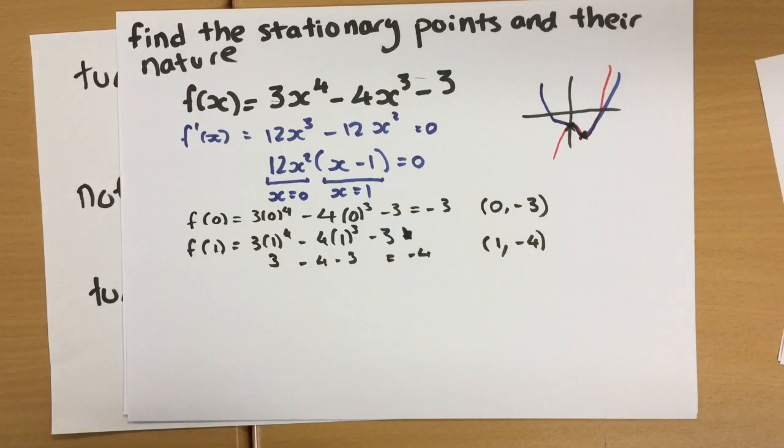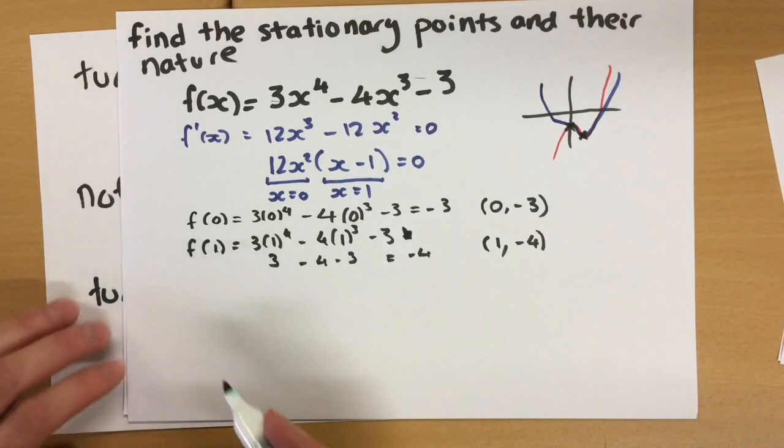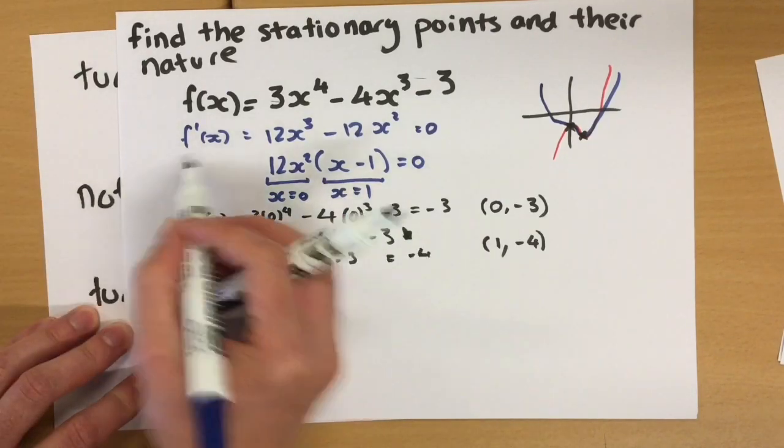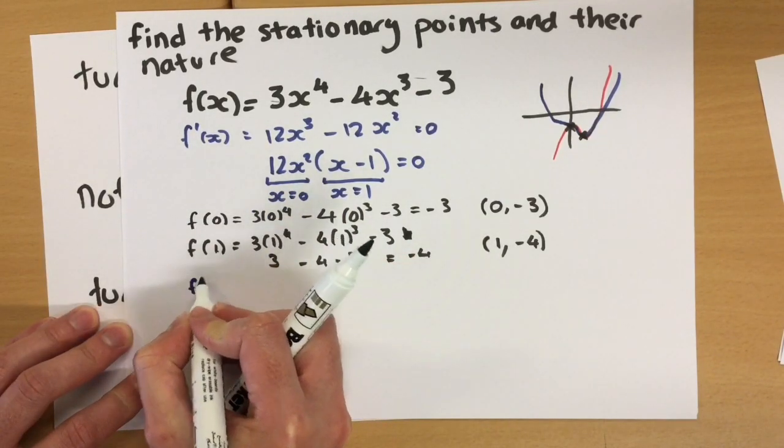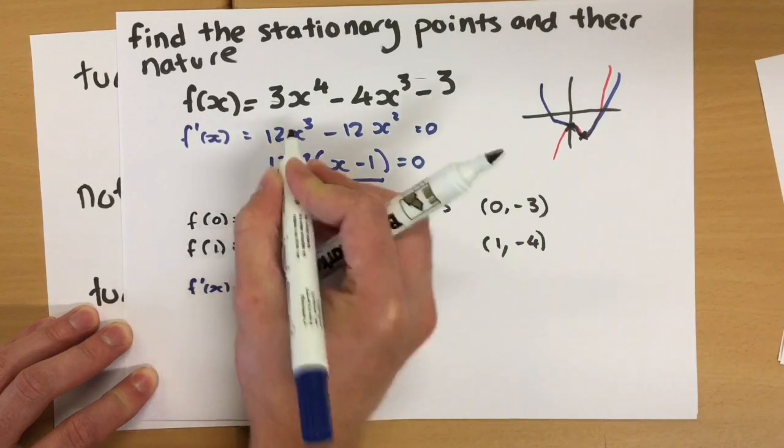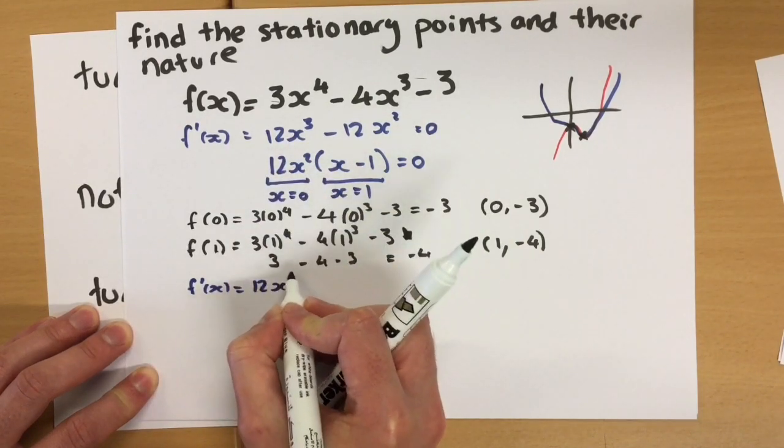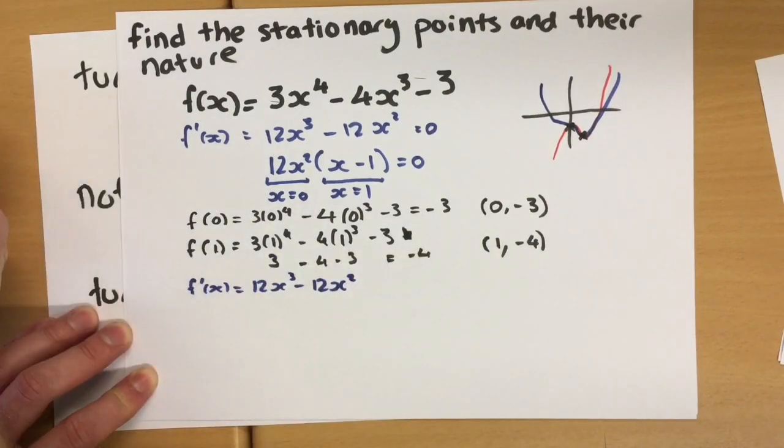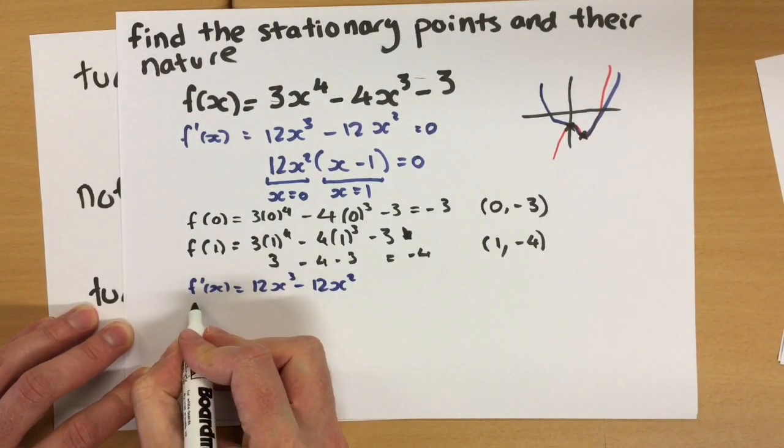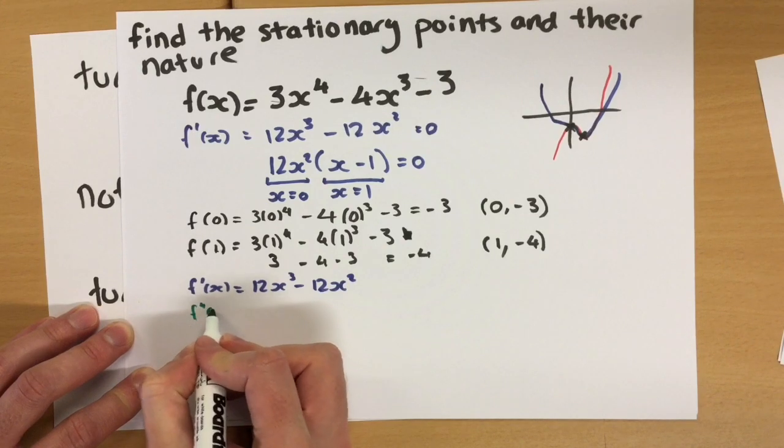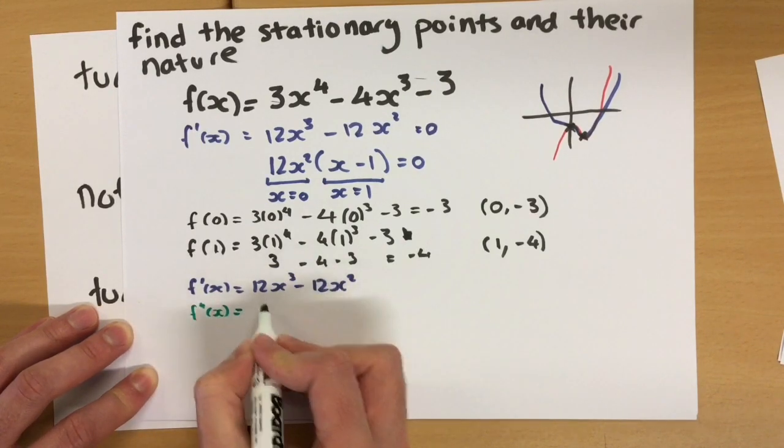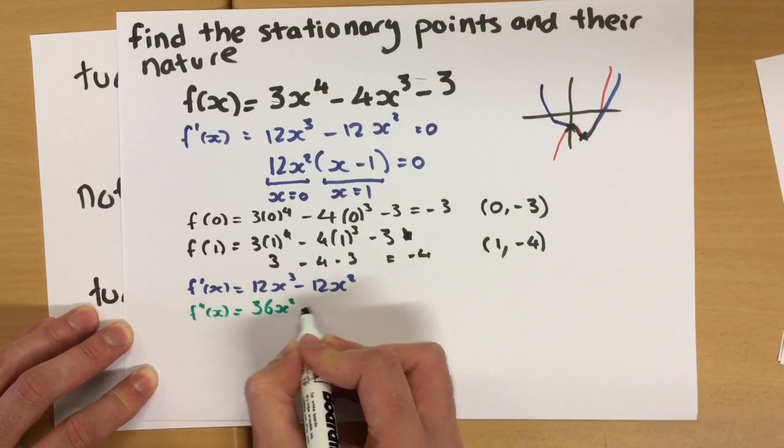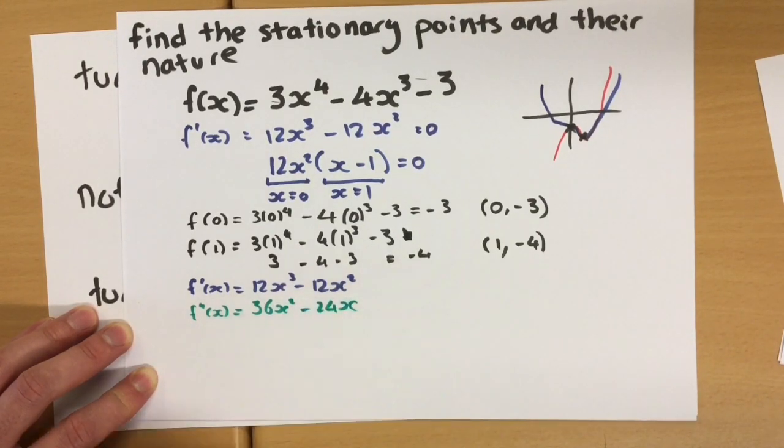This is where our second derivative is especially useful. So we're going to take our original first derivative, which was 12x cubed minus 12x squared, and we'll differentiate that again. So, so far, there's no actual new skills you're using. The same skills of differentiation: 36x squared minus 24x.